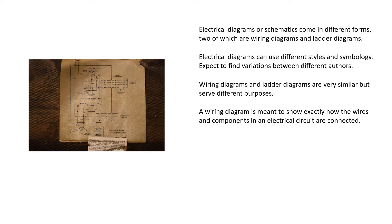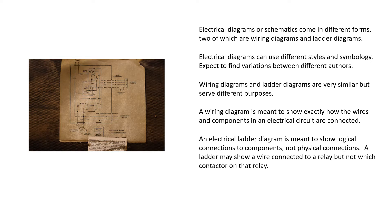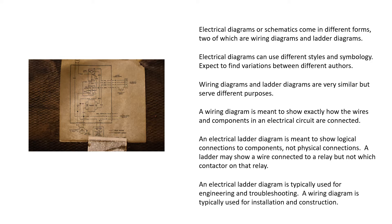A wiring diagram is meant to show exactly how the wires and components in an electrical circuit are connected. An electrical ladder diagram is meant to show logical connections to components, not physical connections. A ladder may show a wire connected to a relay, but not which contact are on that relay. An electrical ladder diagram is typically used for engineering and troubleshooting. A wiring diagram is typically used for installation and construction.